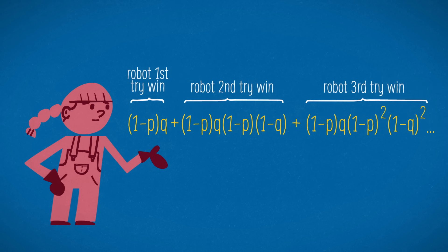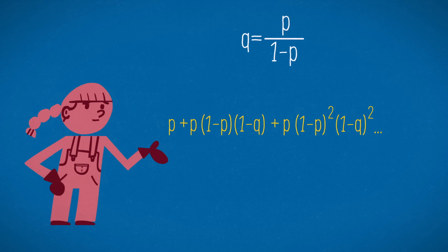To win, the robot needs some number of double misses, then a human failure, followed by a robot's success. If Q equals P over 1 minus P, 1 minus P times Q is P. For our choice of Q, not only do these series have the same sum, but they're the same series.